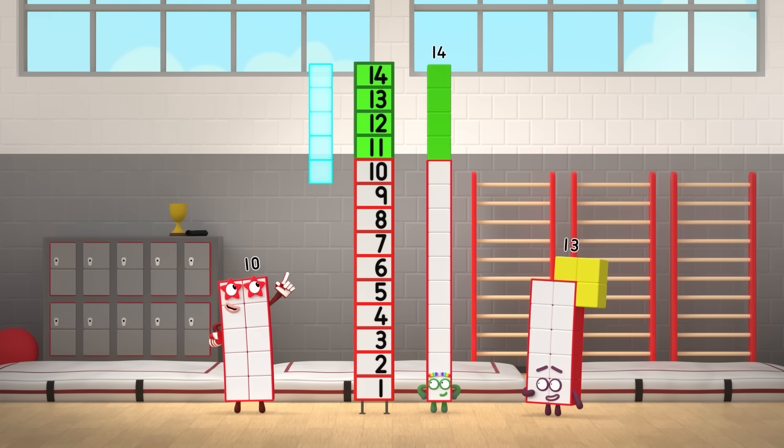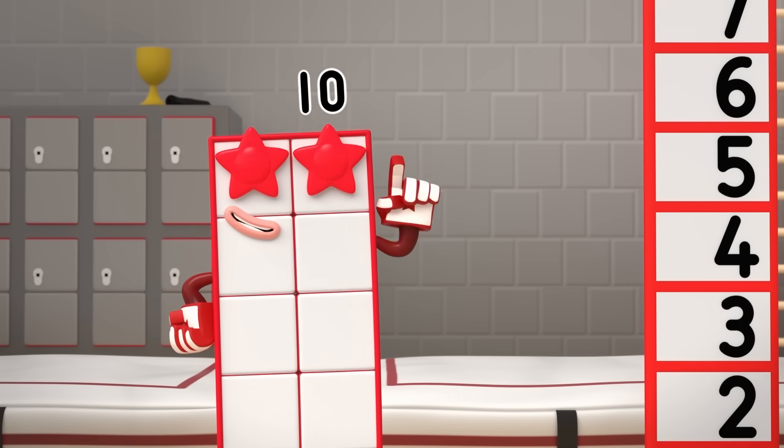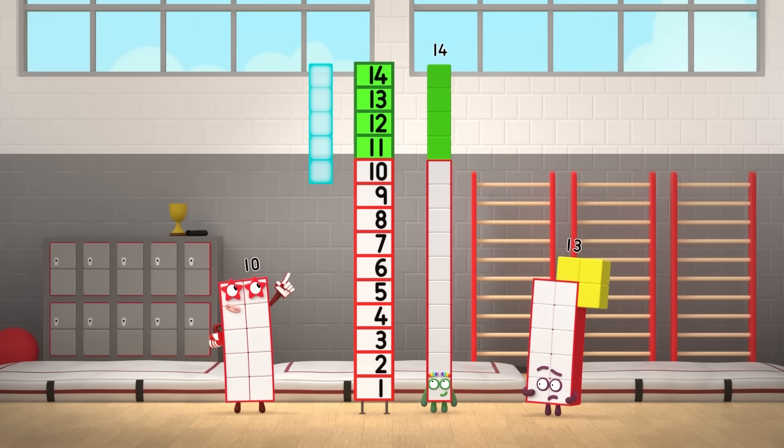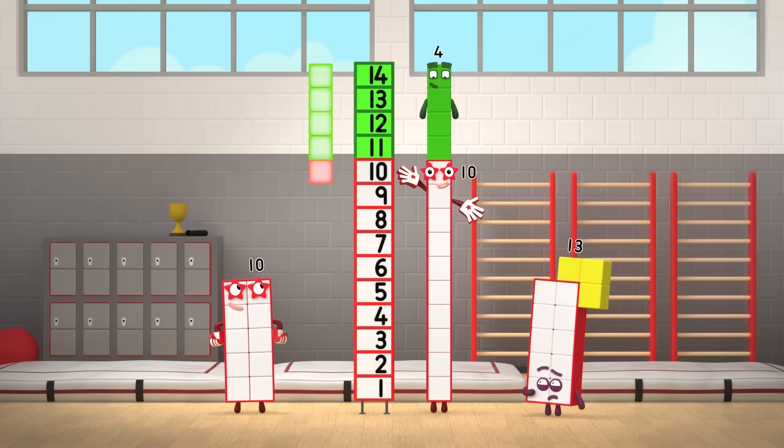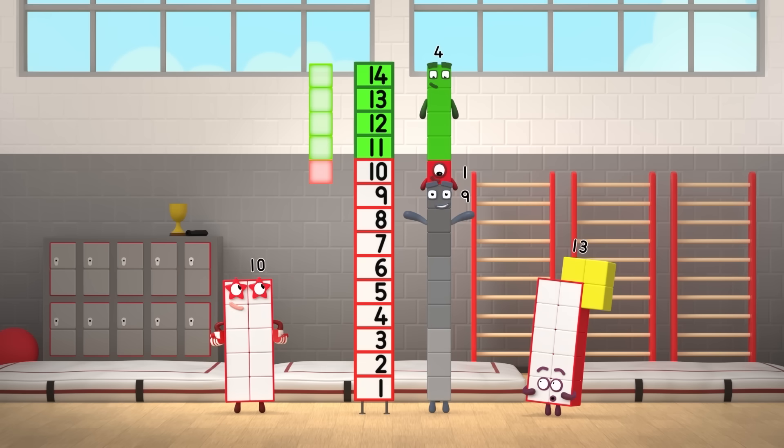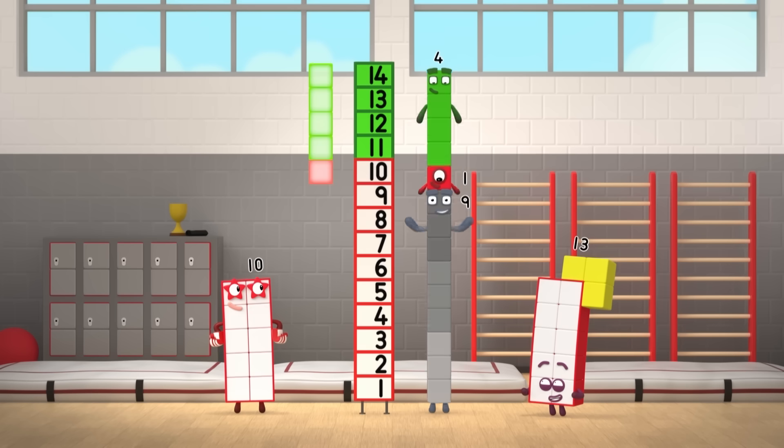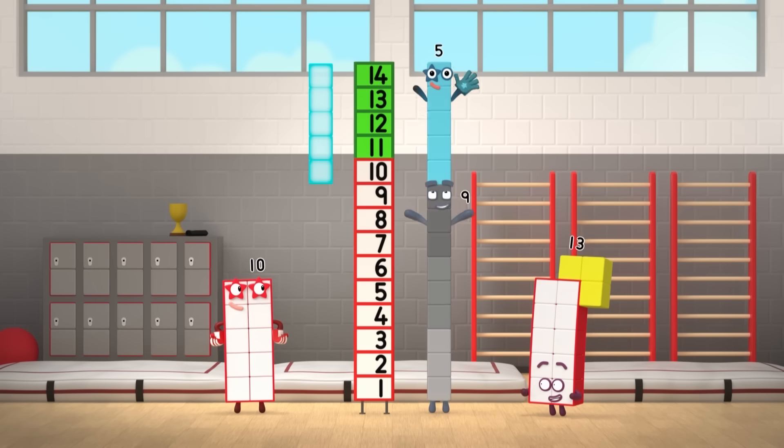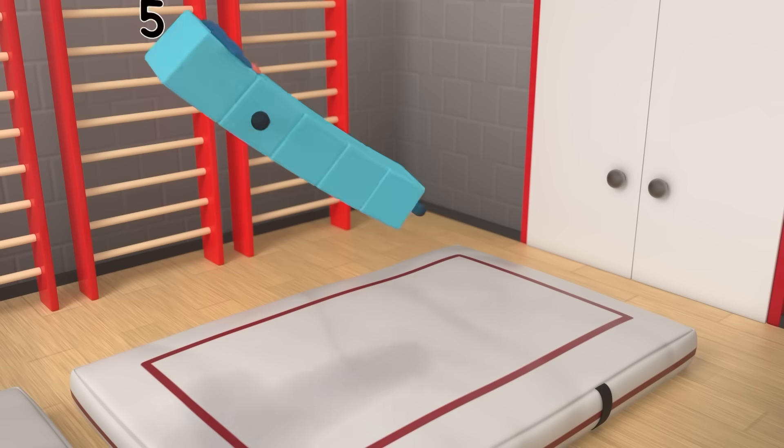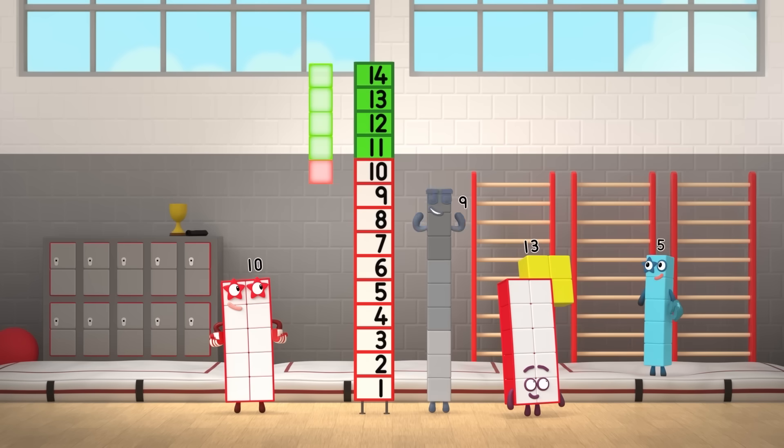We're taking five away from the top, so get to ten first. Five is four and one. So first, take the four away. Fourteen minus four is ten. Then take the one away. Ten minus one is nine. So, fourteen minus five is nine.